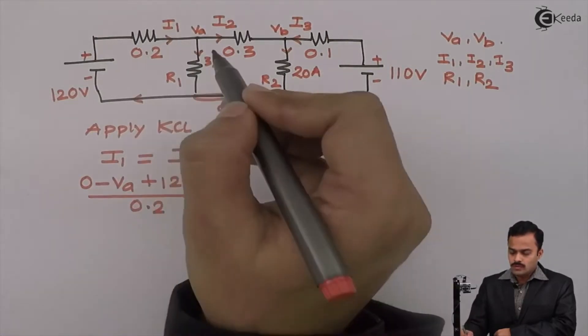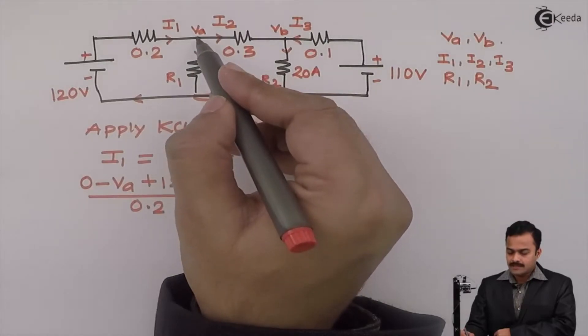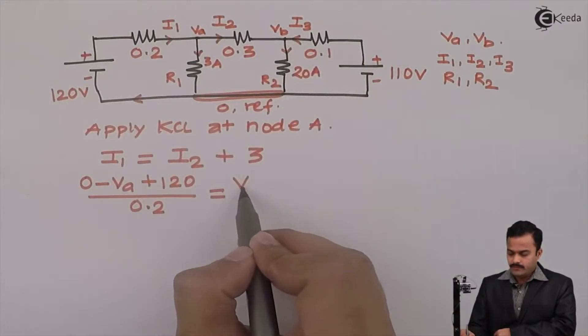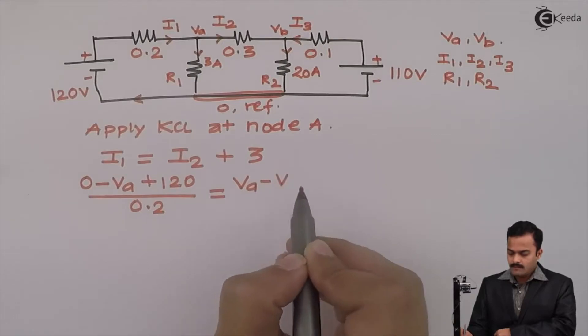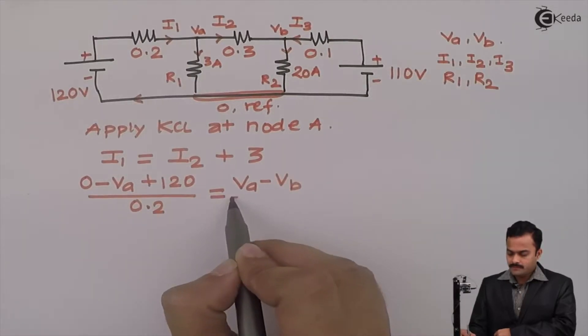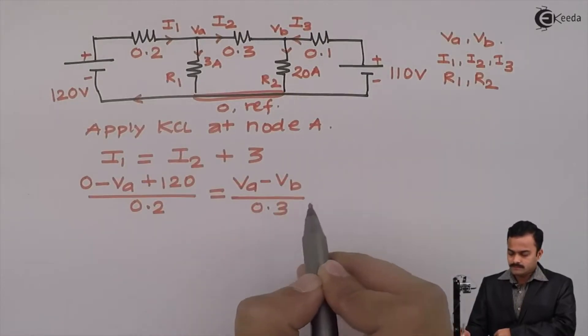Equal to I2 started at A ending on B. So, Va minus Vb divided by 0.3. Plus 3 I will keep as it is.